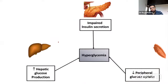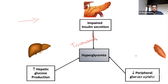Type 2 diabetes is not a disease with a single pathophysiological mechanism. Earlier, three abnormalities were recognized — in the pancreas, the liver, and the skeletal muscle — labeled the 'triumvirate of diabetes.' These three were considered the major targets in the causation of hyperglycemia.